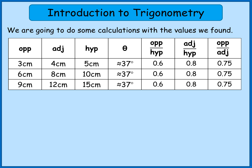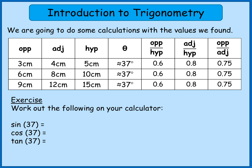So there seems to be a link between the angle size and those three calculations. What I'd like you to do now is get your scientific calculator and work out sin 37, cos 37, and tan 37. You should see sin, cos, and tan towards the top half of your calculator. You might sometimes need to put brackets depending on your particular calculator. If you want to work those out for yourself, pause the video now.